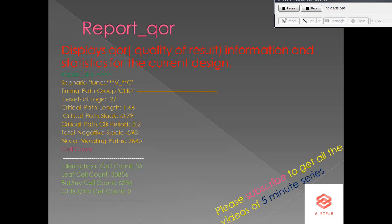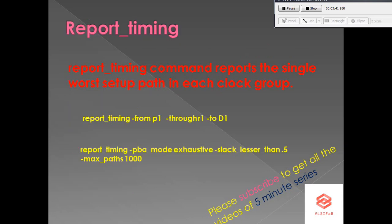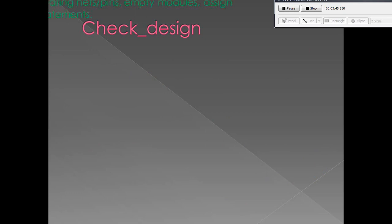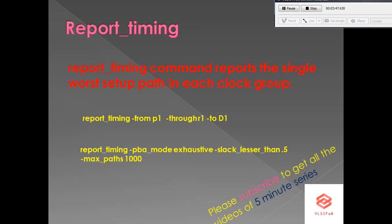The report_qor command reports statistics of the current design including timing information, cell count details such as combinational and sequential cells, and total area. It will also report any DRVs present, such as max cap and max transition violations.